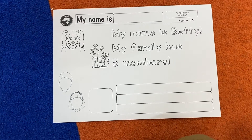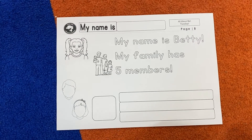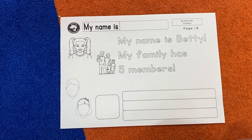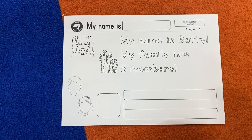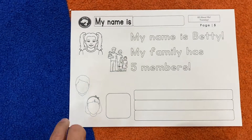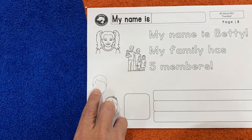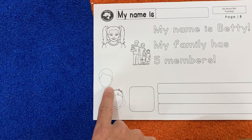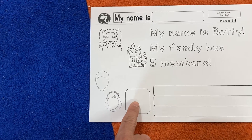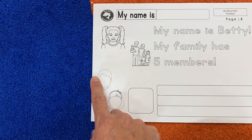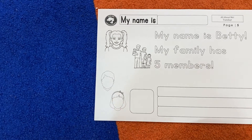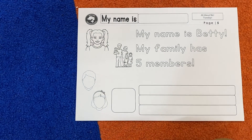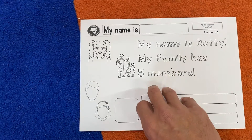Hello Betty! Her name is Betty, and she says my family has five members. Now it's your turn — draw a picture of your family, draw a picture of you, and then write a sentence please. It's worksheet number five.